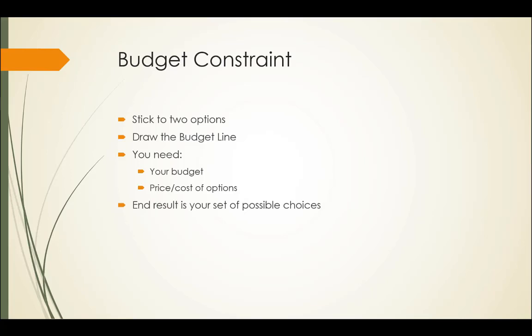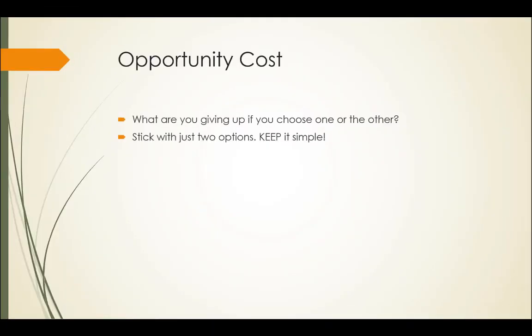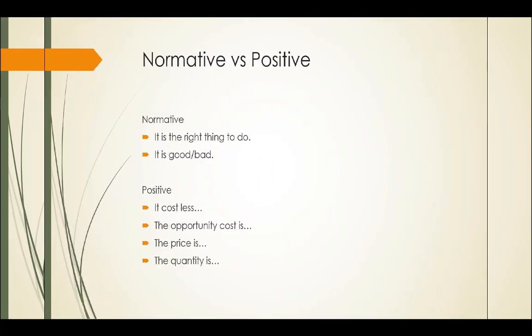The end result is you're going to have a set of possible choices. That's basically what the line represents. And then from that you should be able to go to the next paragraph, which is opportunity cost. Opportunity cost is when you choose one, what are you giving up? What is your next best option? We're still going to just stick with two options here, keep it simple.